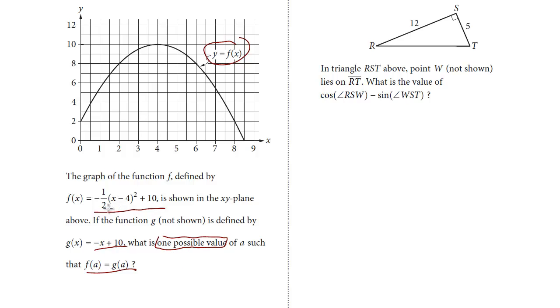So the first step is we're going to set these both equal to each other. So I'm just going to rewrite this first one. It's negative 1/2 times (x - 4)² plus 10. And we want to set the two functions equal. Remember, this is f(x) and g(x). And we want to find the value a where they're both equal to each other. And so here's the other equation. We have negative x plus 10.